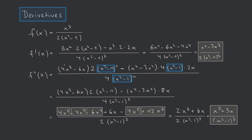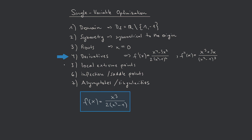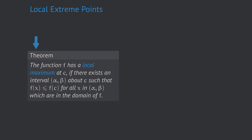These are the first and the second derivative. We now use them to take care of the fifth point — local extreme points. Before calculating, let's have some general thoughts. A function f has a local maximum at a point c if there exists an interval (α, β) about c such that f(x) ≤ f(c) for all x in that interval which are in the domain of f.